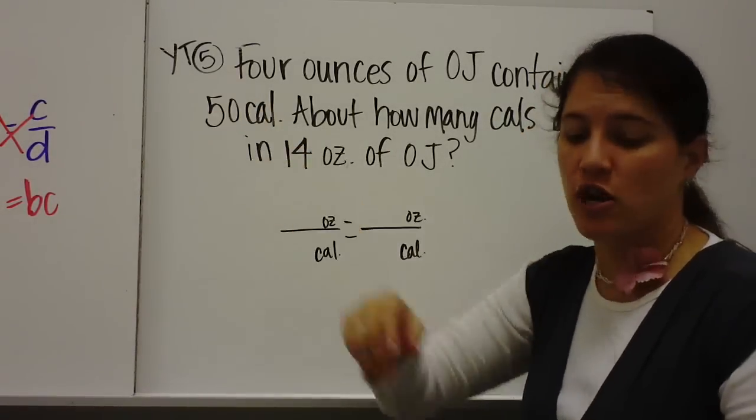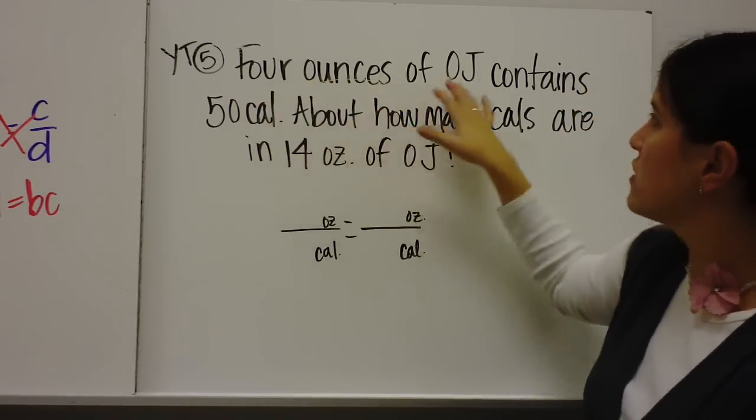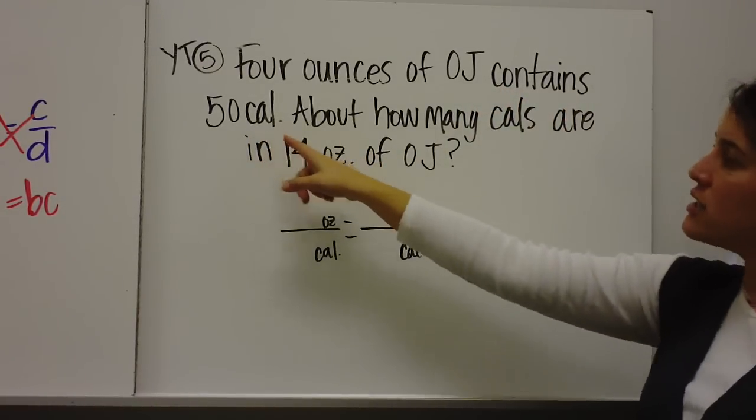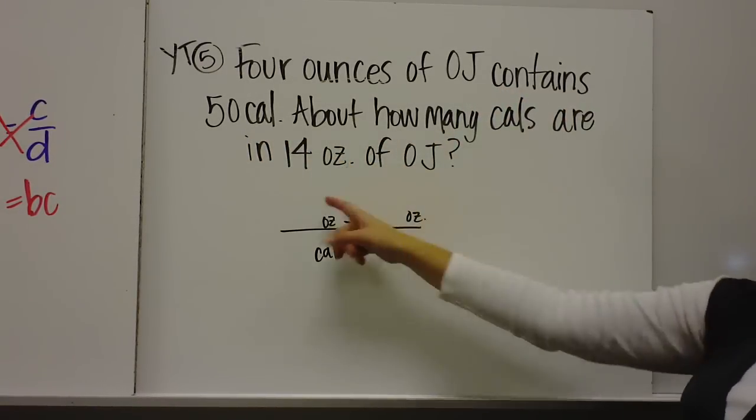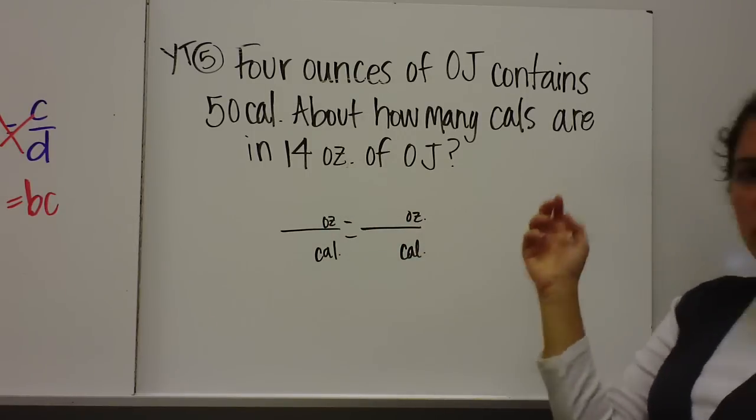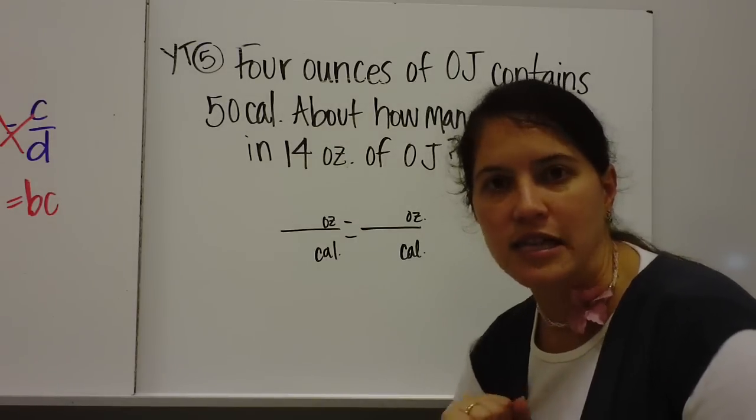So this last one is a you-try. Four ounces of orange juice contains 50 calories. About how many calories are in 14 ounces of orange juice? So I want you to solve this on your own, pause the video, and then press play when you're ready to see the answer.